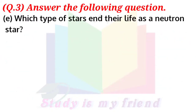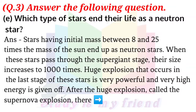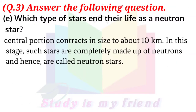E. Which type of stars end their life as a neutron star? Answer: Stars having initial mass between 8 and 25 times the mass of the sun end up as neutron stars. When these stars pass through the super giant stage, their size increases to 1000 times. The huge explosion that occurs in the last stage of these stars is very powerful and very high energy is given off. After this huge explosion, called the supernova explosion, their central portion contracts in size to about 10 km. In this stage, such stars are completely made up of neutrons and hence are called neutron stars.